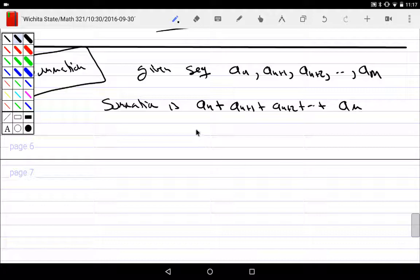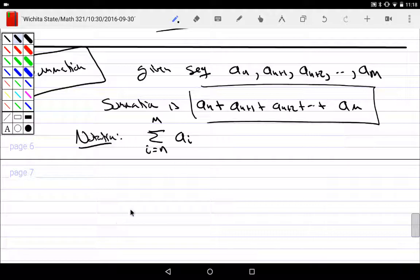Normally I don't like writing that. I don't like writing that, so we use this notation: sigma, which means sum from i equals n to m of a_i.